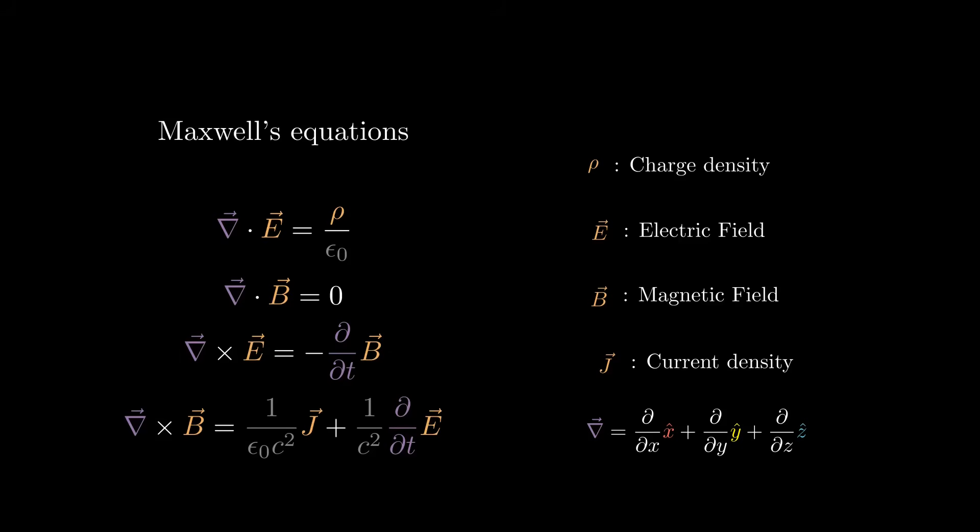Third one is a cross product, and it equals the derivative in time of a vector. Here, we just take the derivative component-wise. And the last one is a cross product again, and it equals a vector plus a derivative of a vector.